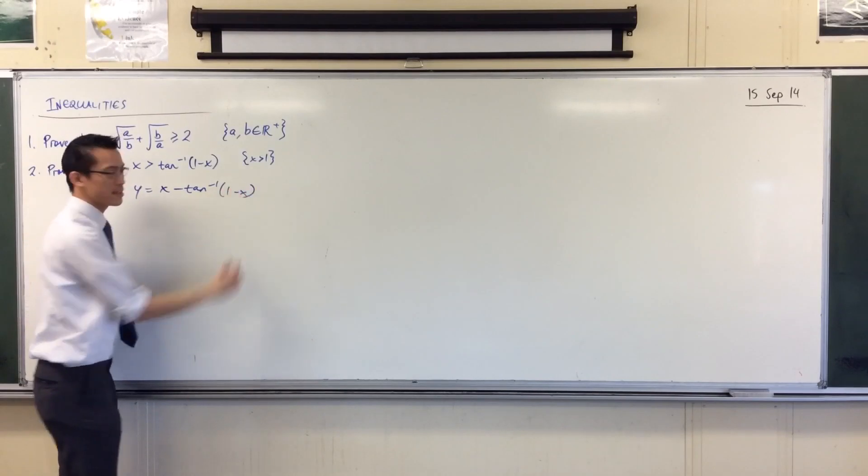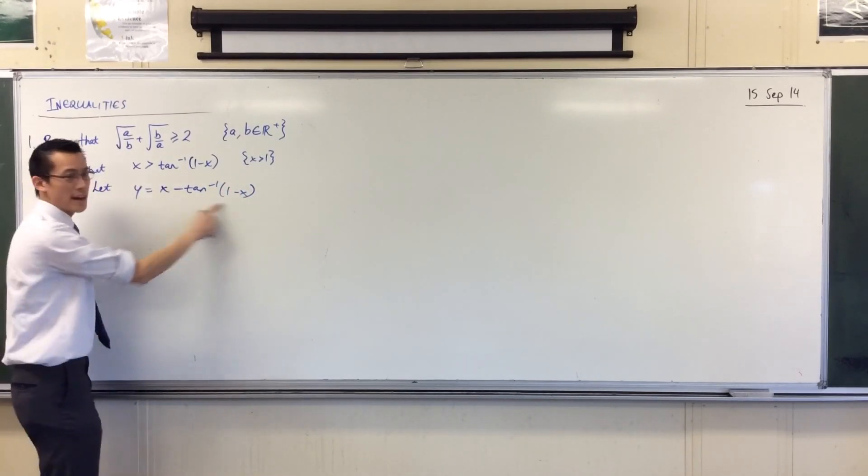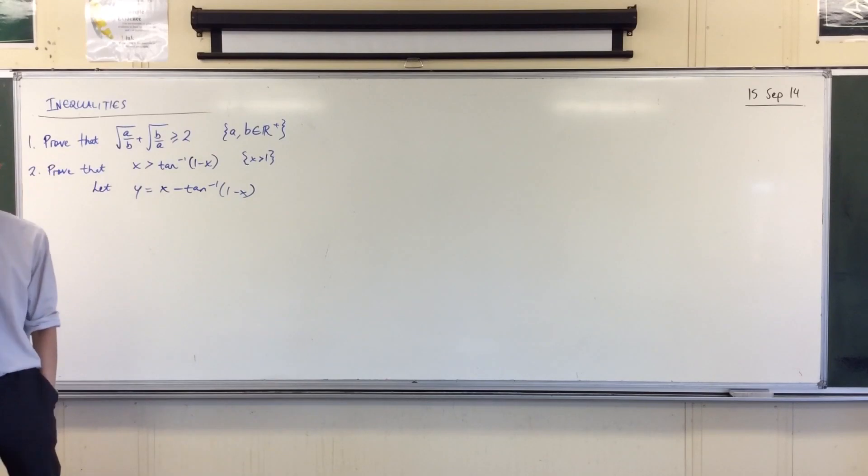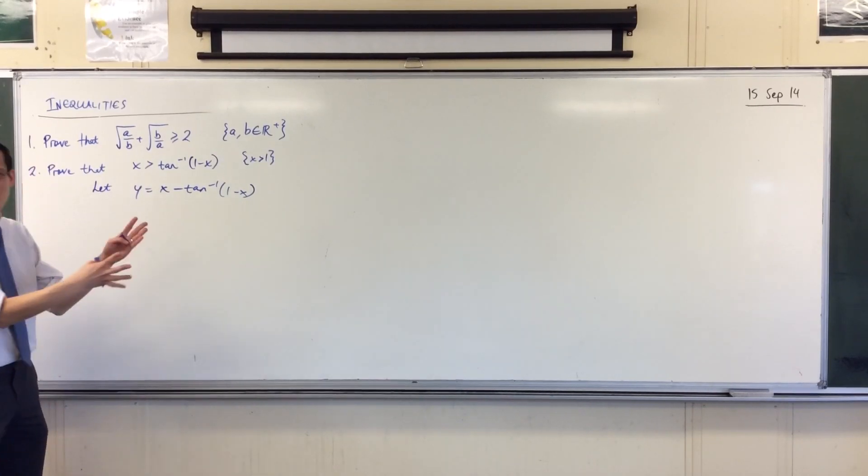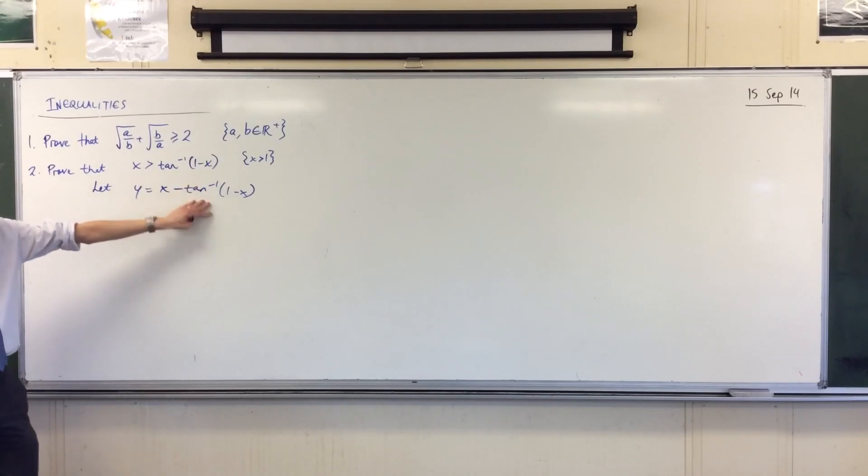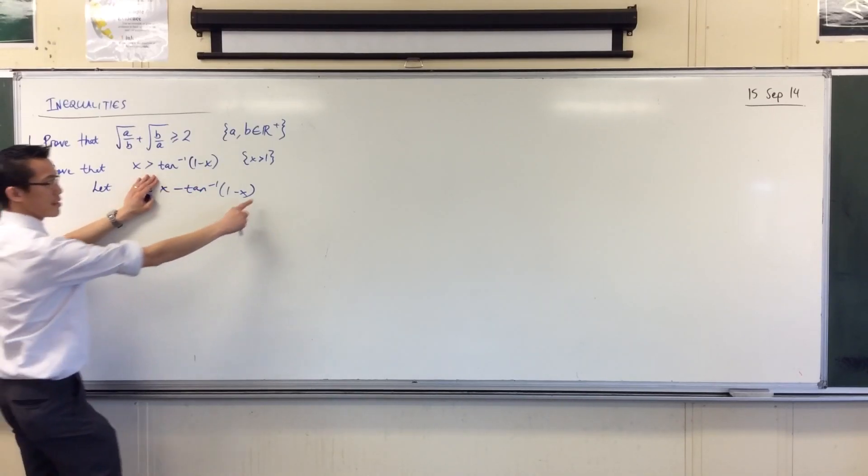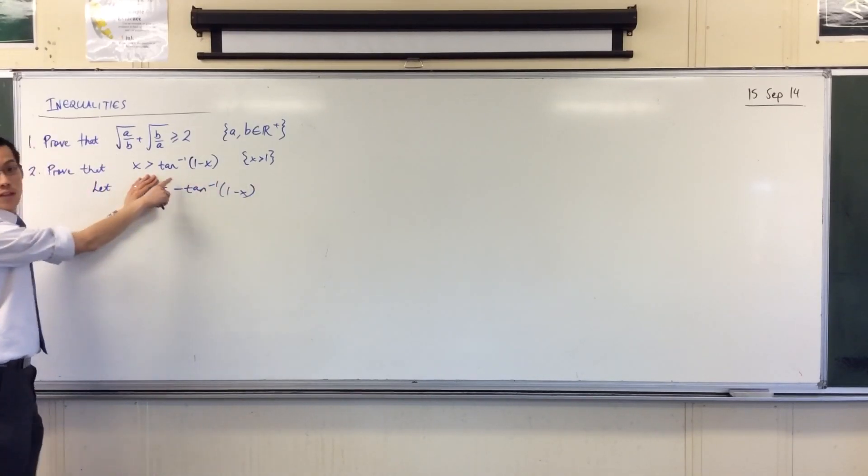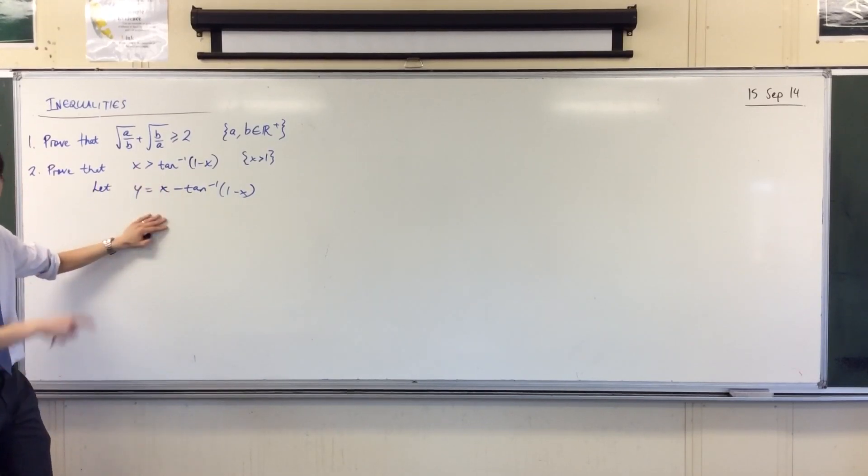Now, the reason why this is useful is because if I prove this is greater than zero. This is a constant theme in inequalities. It's easy to prove that things are positive, because we know lots of things are positive. If I can prove this thing is positive, that this is greater than zero, then I've proved this. Done. So how do I prove that this is positive?